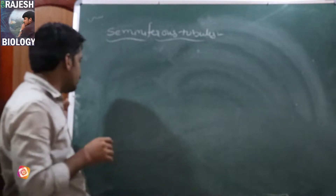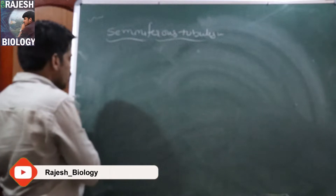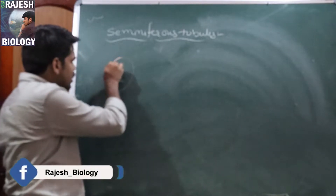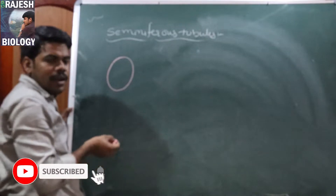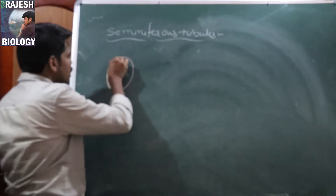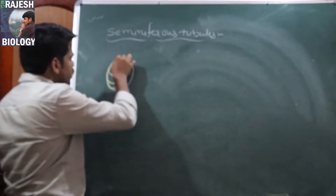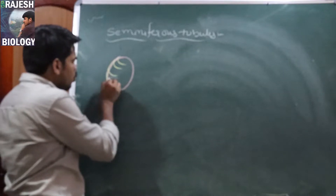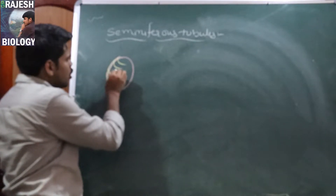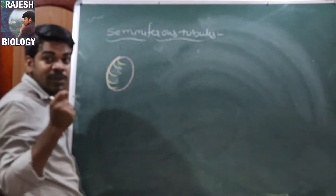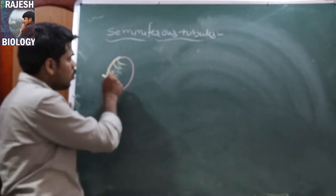Let's revise where the testes are located and where the seminiferous tubules are located. Testes are present within the scrotal sac and are oval-shaped pinkish colored structures. The outer layer of the testes enters into the testes to divide it into testicular lobules — 250 testicular lobules. I am now going to take one seminiferous tubule out from the testes.